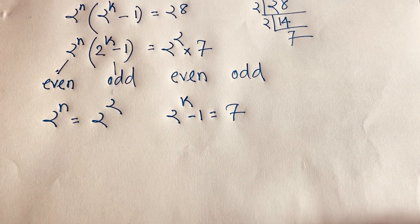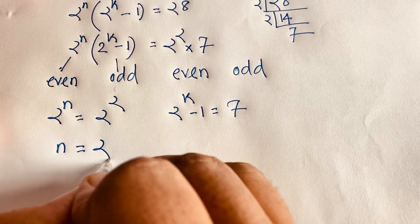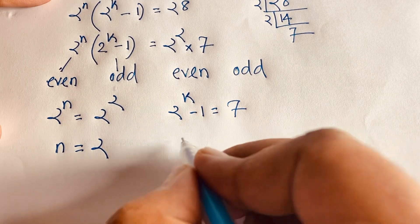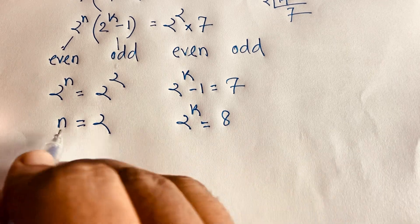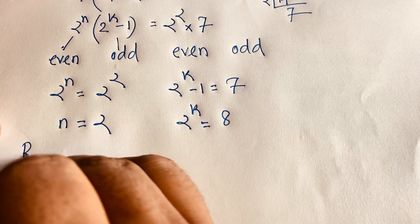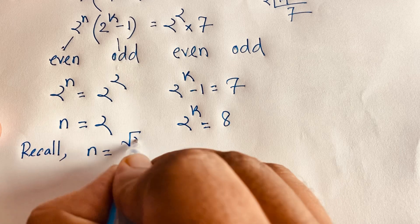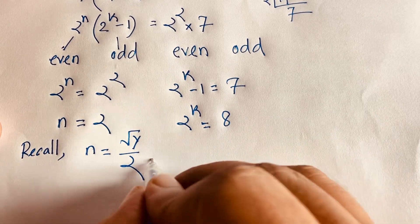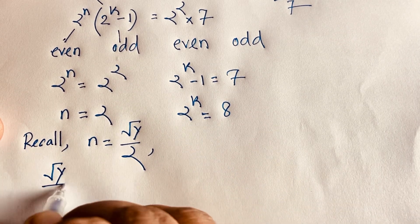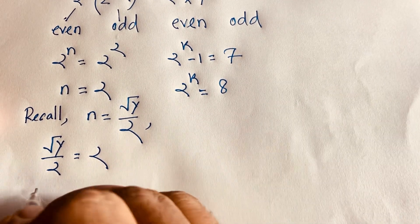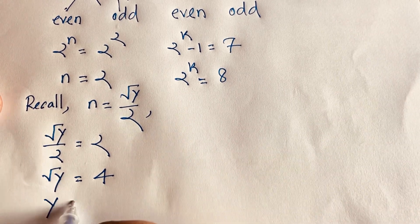Since the bases are the same, n = 2. From 2^k − 1 = 7, we get 2^k = 8 = 2³, so k = 3. Now recall n = √y/2, so √y/2 = 2, which gives √y = 4, and squaring both sides gives y = 16.